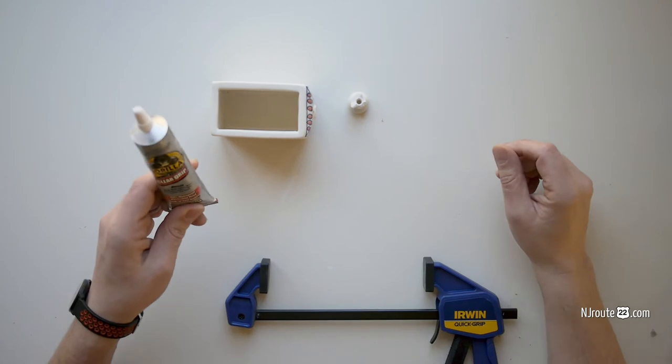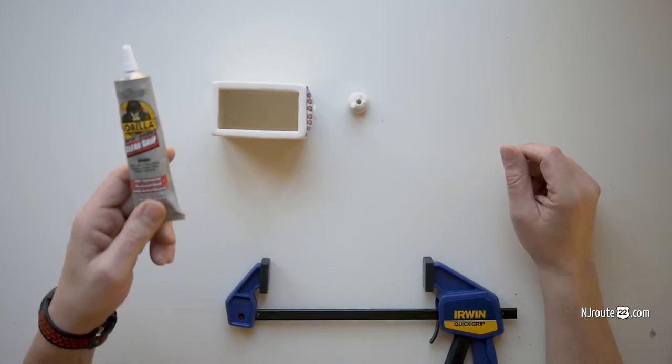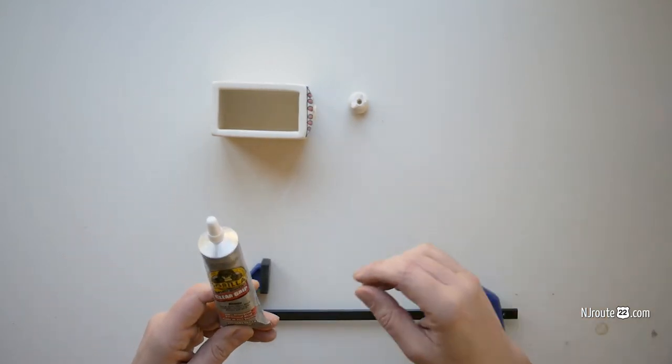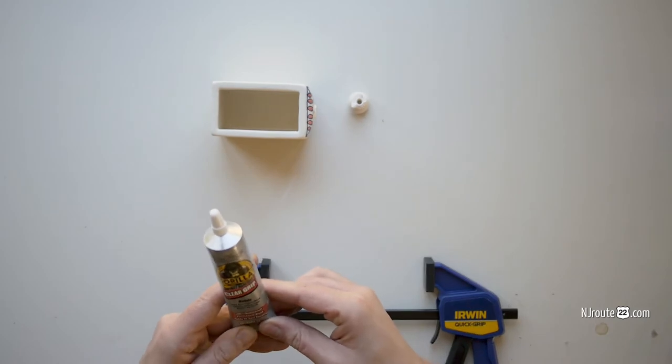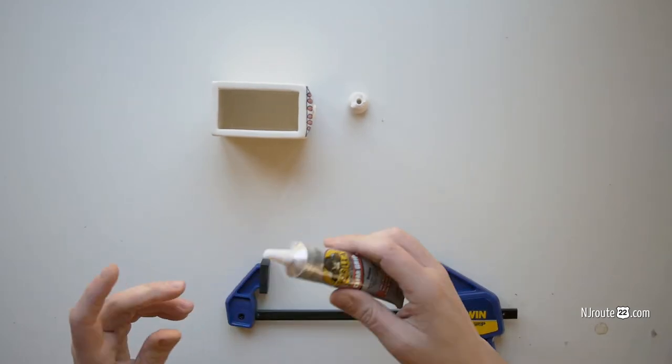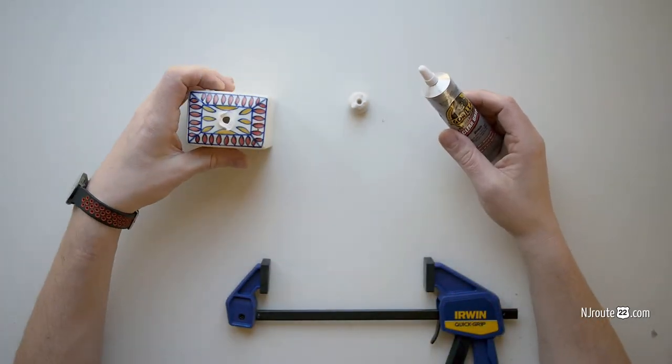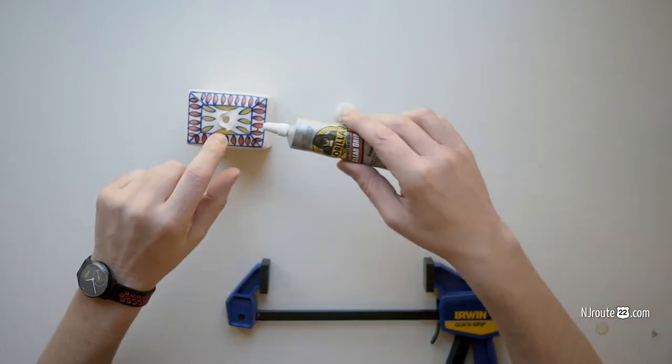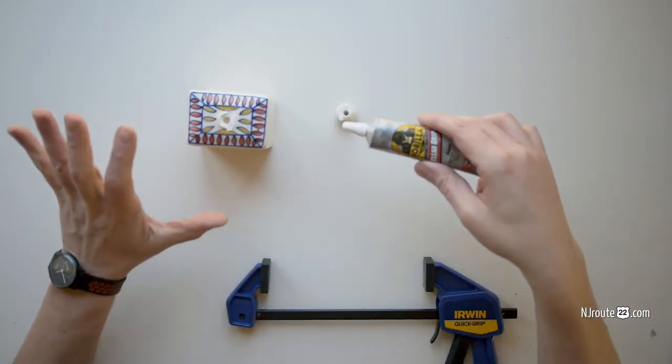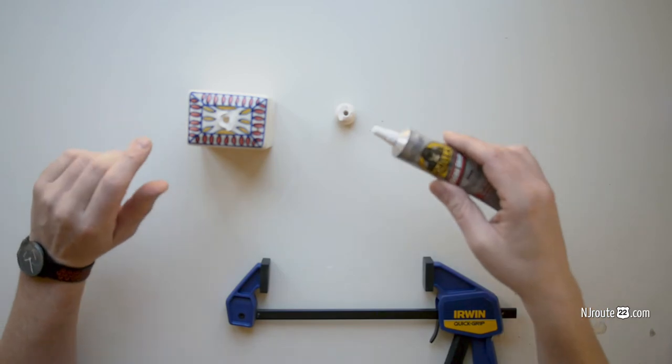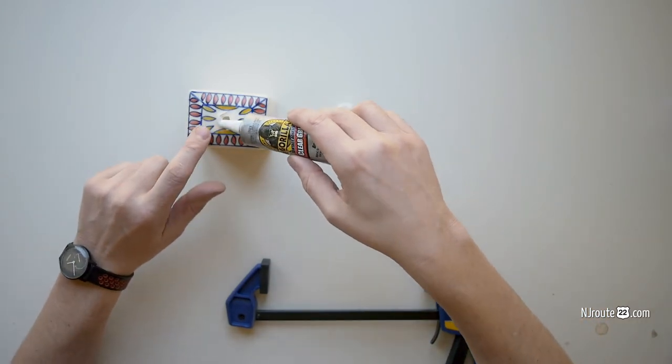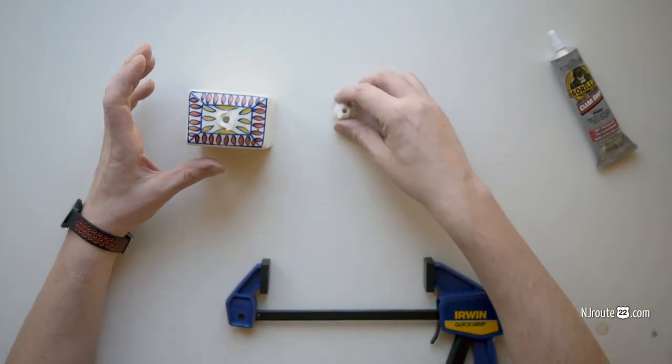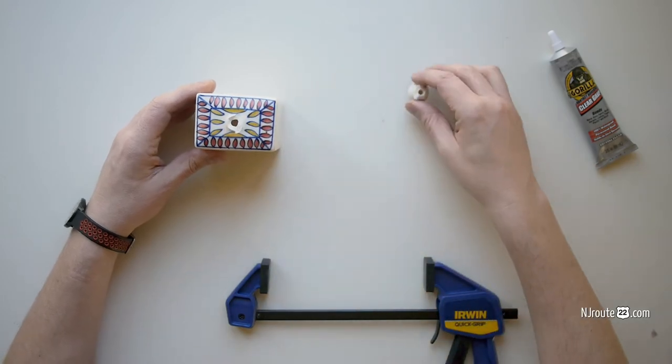Today, we're going to use something called Gorilla Clear Grip Contact Adhesive. This bonds also, but in this case, they recommend you glue both surfaces and wait a couple minutes for it to start its reaction with the air, and then it'll make a stronger bond when you connect it or put it back together.